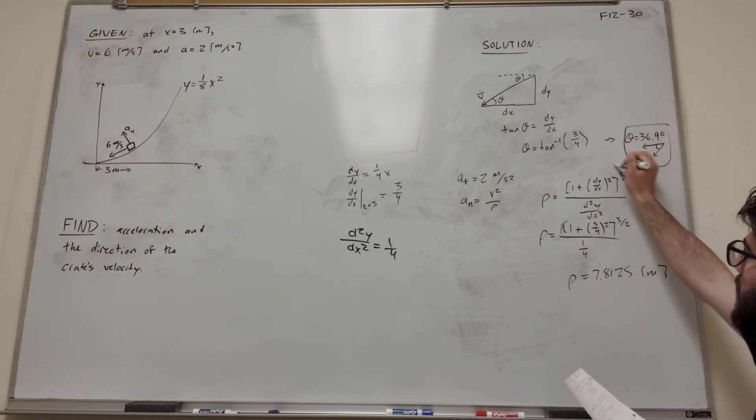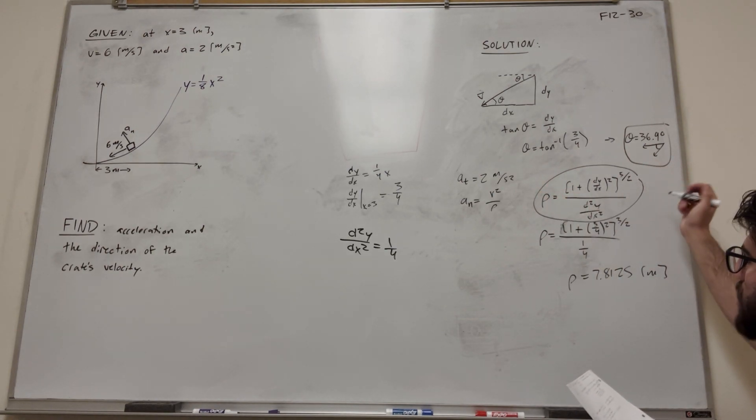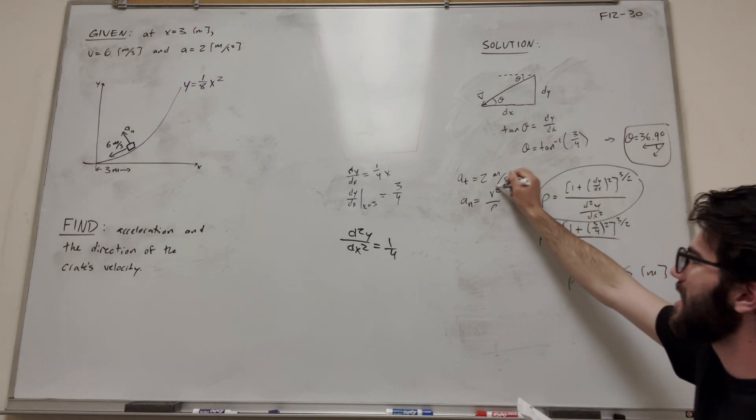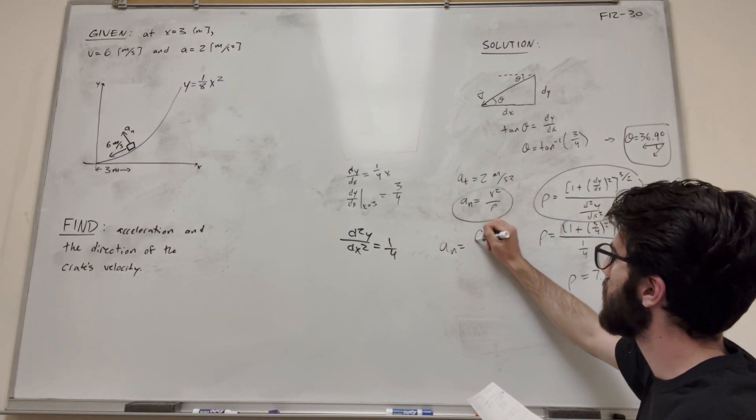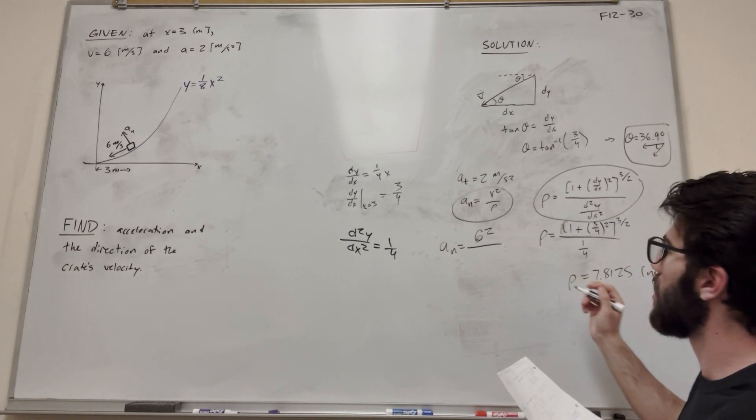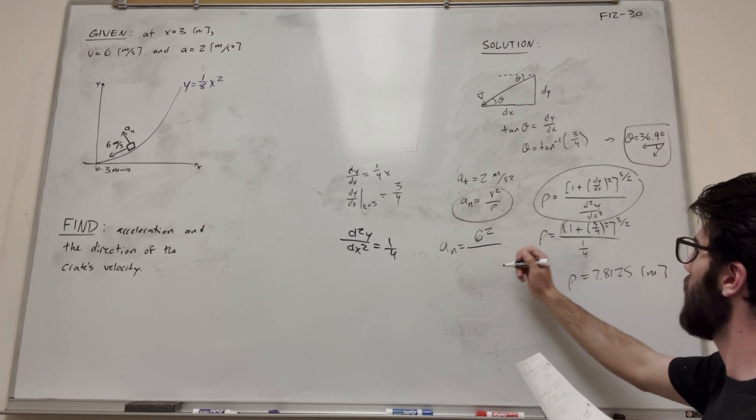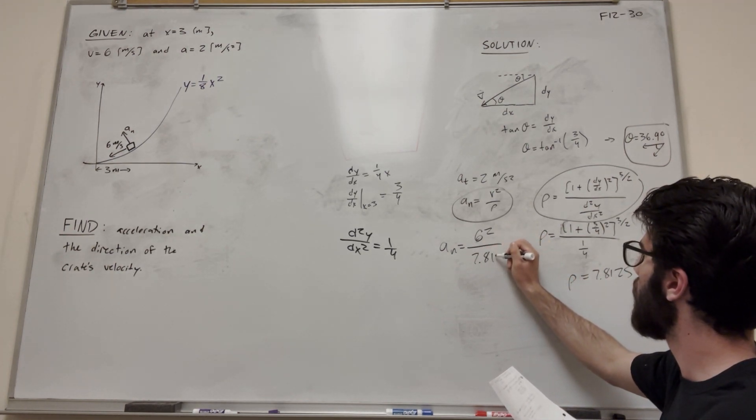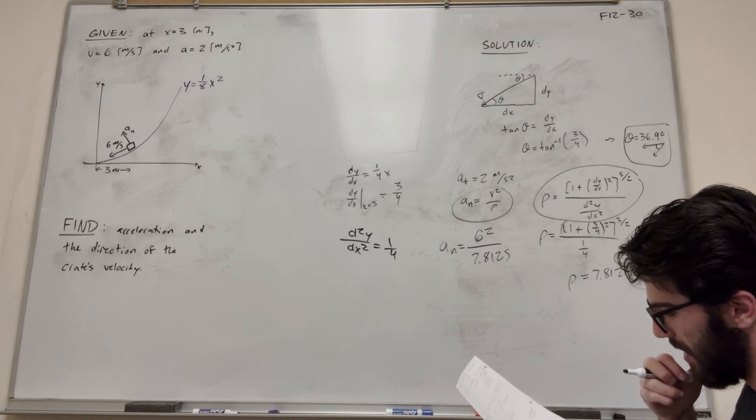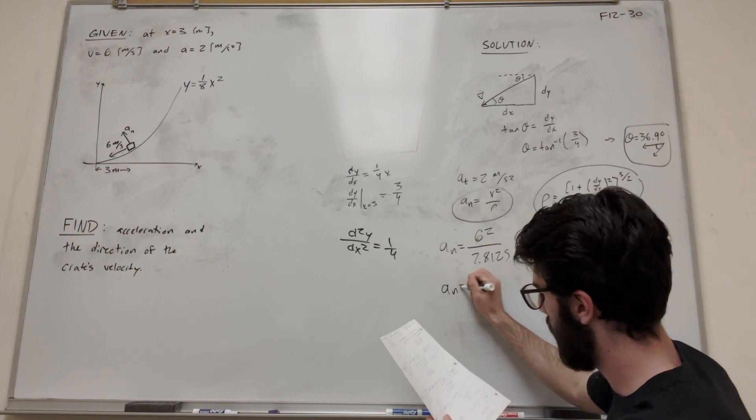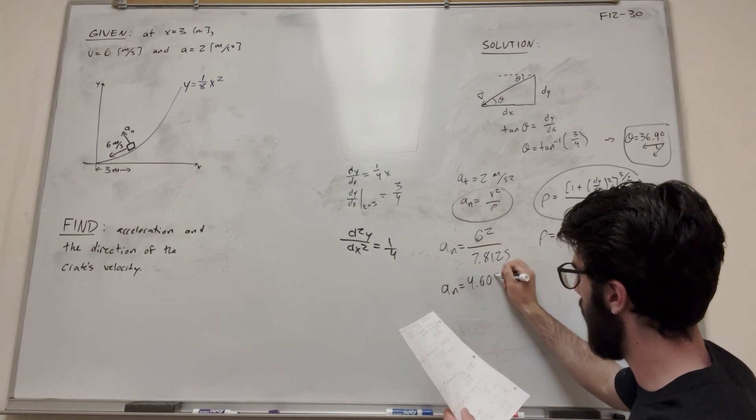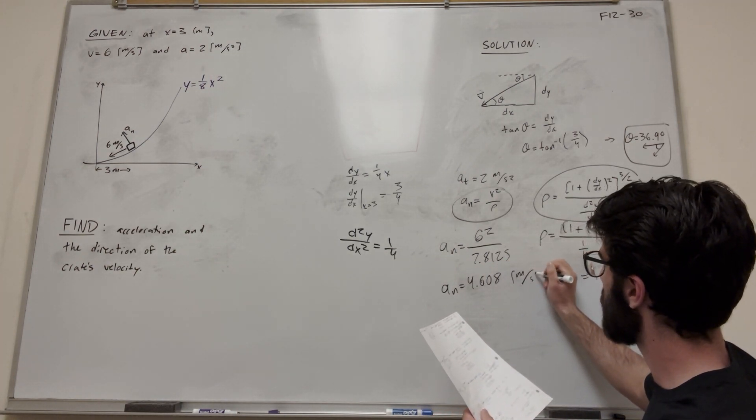So we can go back to this equation. Actually, we solved that. Okay, we just solved that, so we can go back to this equation. So let's plug what we know. Velocity squared, we're given 6 meters a second, and then squared it over 7.8125. So we do this, and we get that acceleration normal is equal to 4.608 meters per second squared.